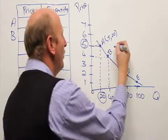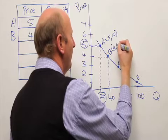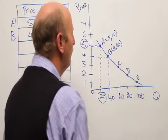So therefore, the coordinates at point B is a price of 4 grand and a quantity of 40.